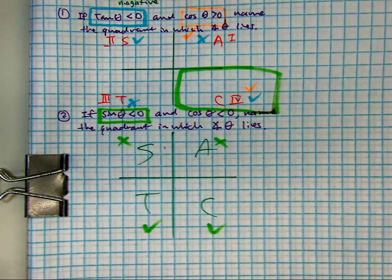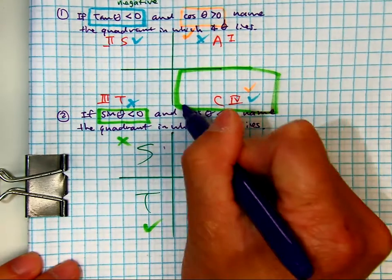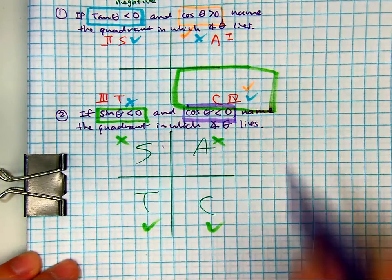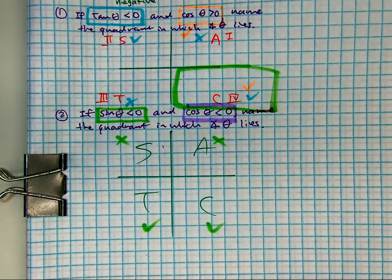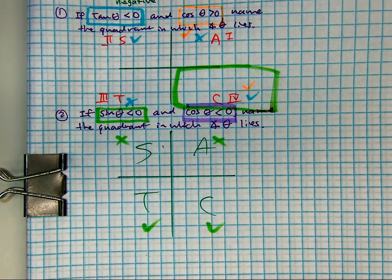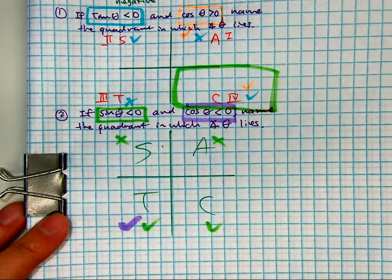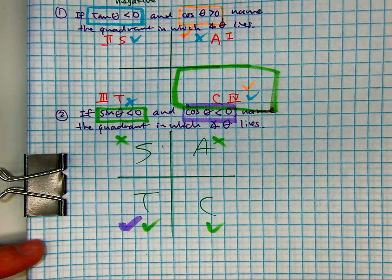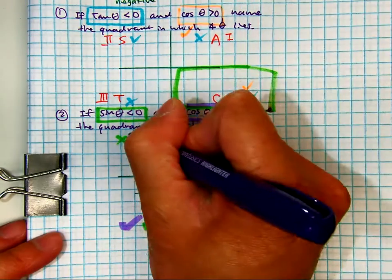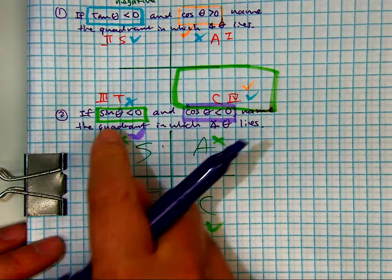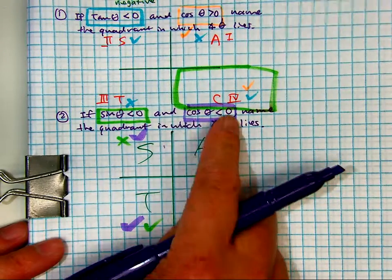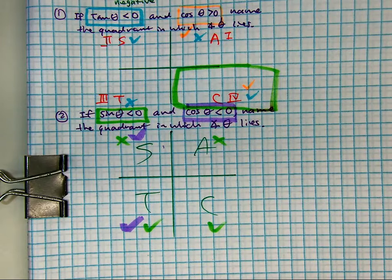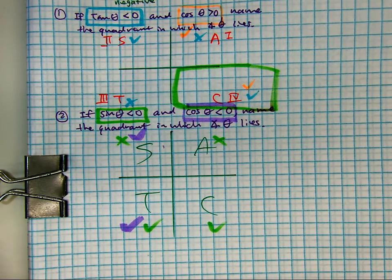Where is cosine less than zero? Correct. So Kalea asks, where's sine negative and cosine negative? Quadrant three is our answer. Raise your hand if you got that.